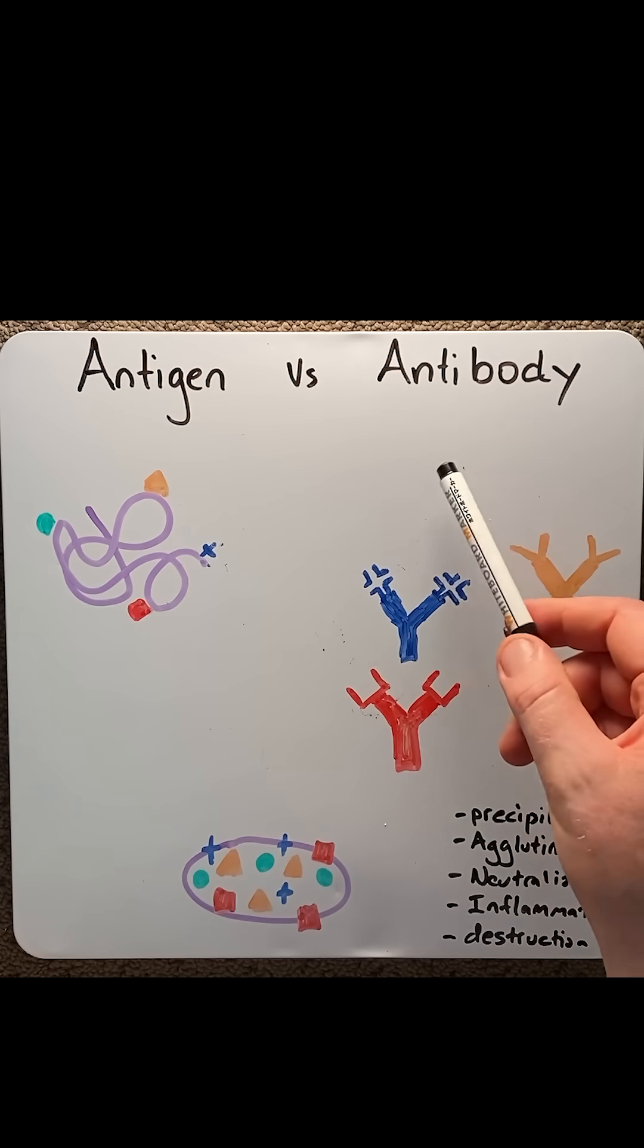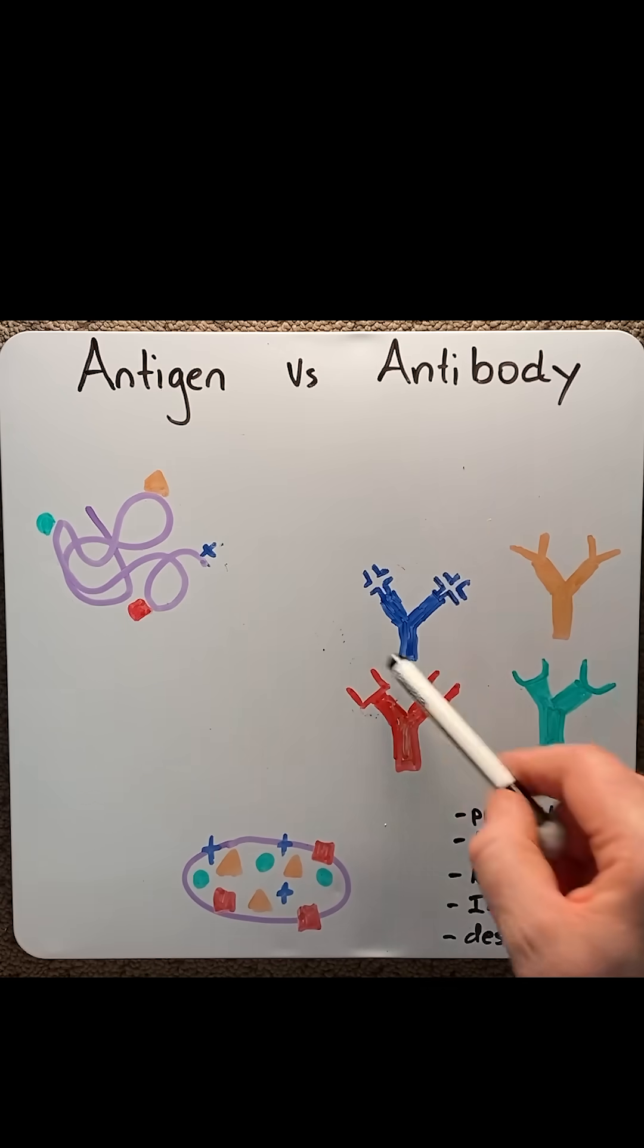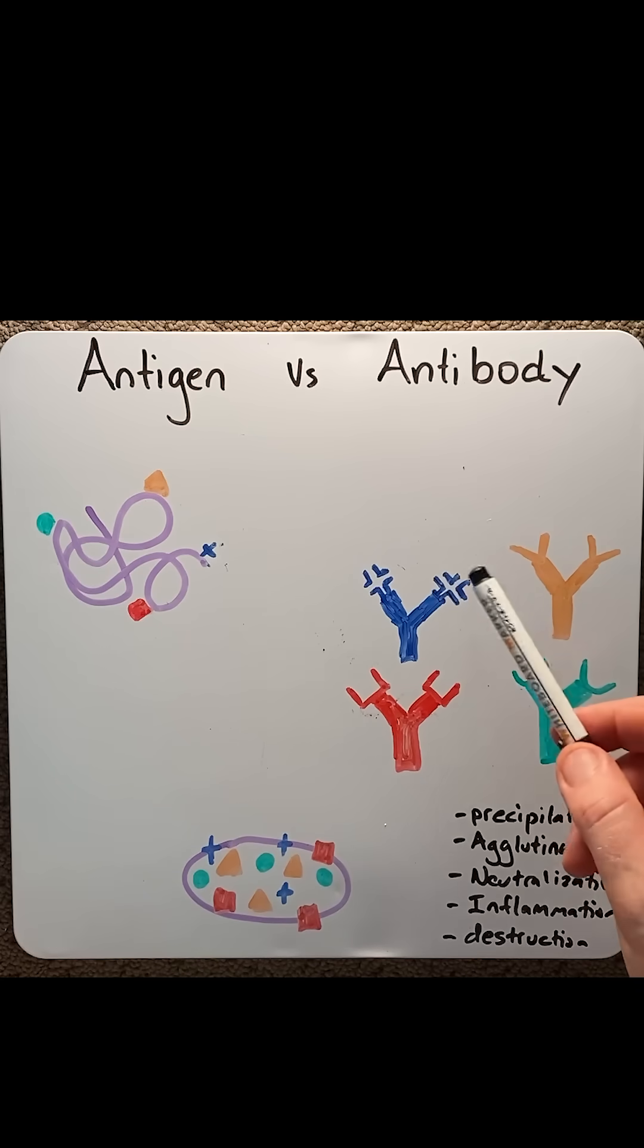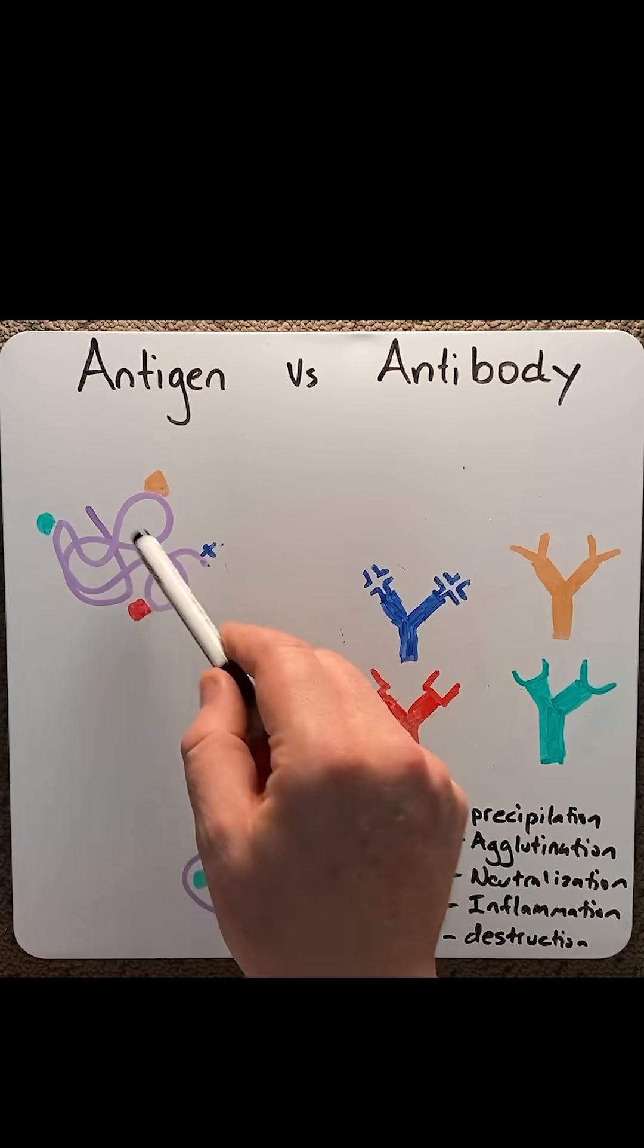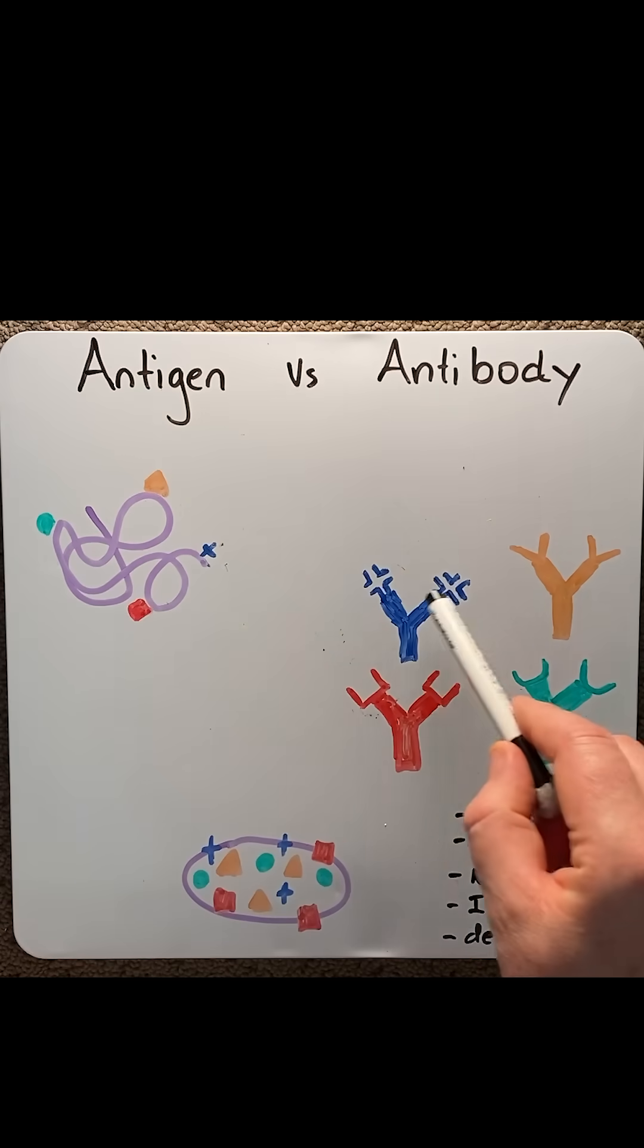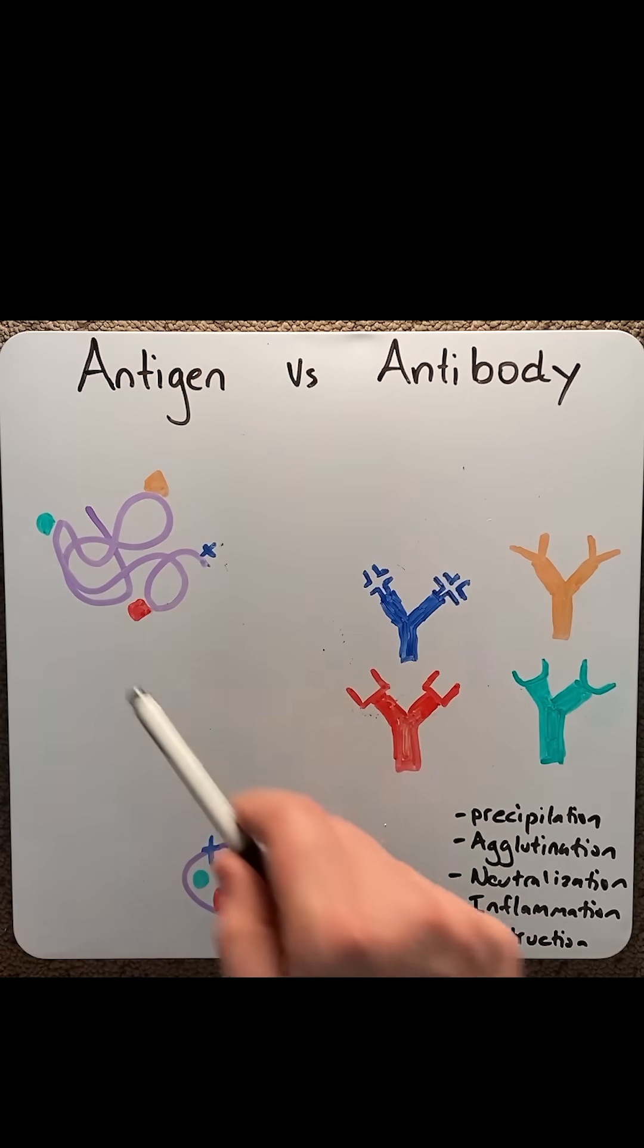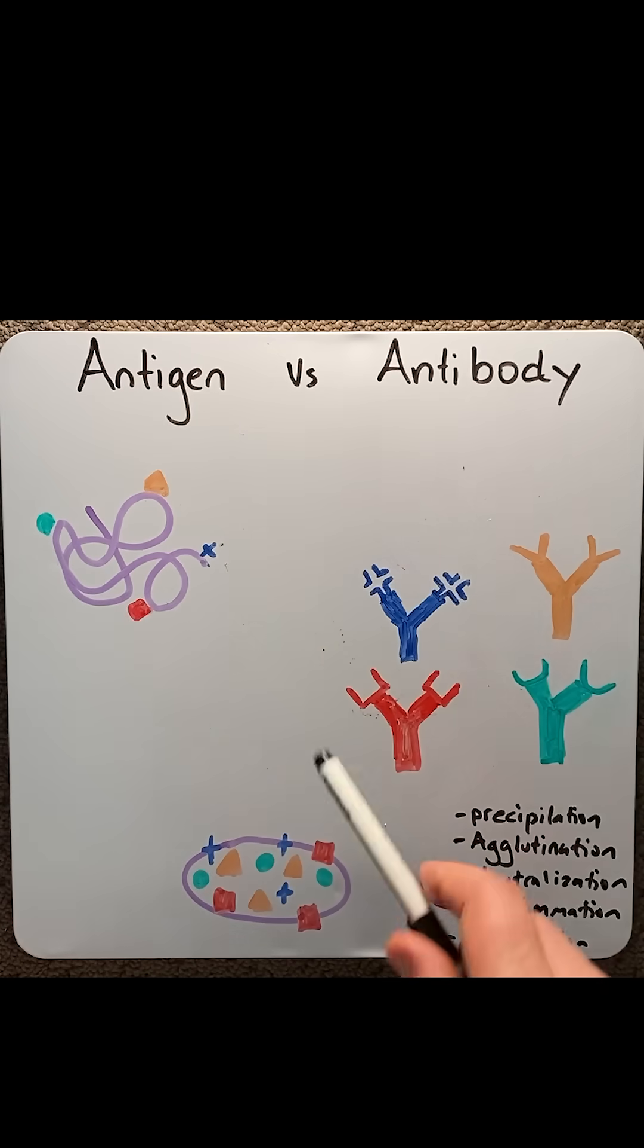Now antibodies are also called immunoglobulins and are Y-shaped protein molecules that are made by a type of white blood cell called B cells in response to exposure to an antigen. The variable region of an antibody is where it binds to the epitope. This region is known as the paratope.